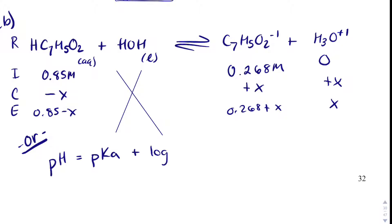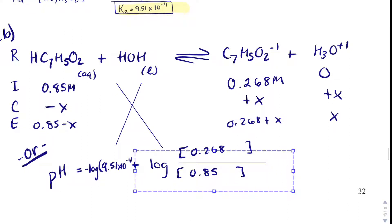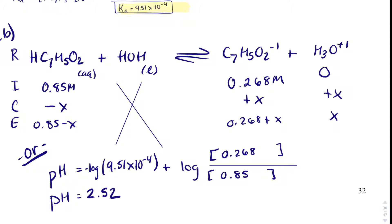pH equals pKa plus log of your conjugate base, which is benzoate. And this formula is on your formula sheet. Divided by the acid, which is HC7H5O2. And I can plug in what I know. This guy and this guy. 0.268. 0.85. pKa is a negative log of the Ka. So, I'm going to type negative log. We just solved for Ka. It was 9.51 times 10 minus 4. And when I solve for the pH, I will get the same answer as I would have gotten if I had a RICE table, and I get 2.52 as a pH.